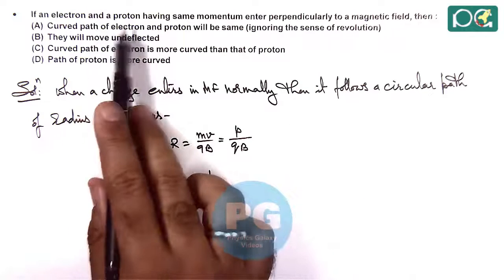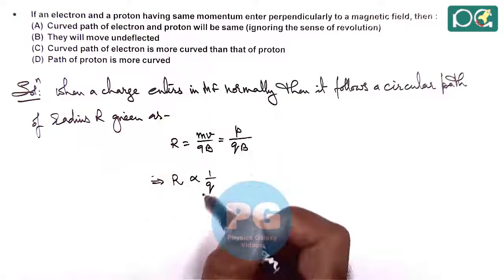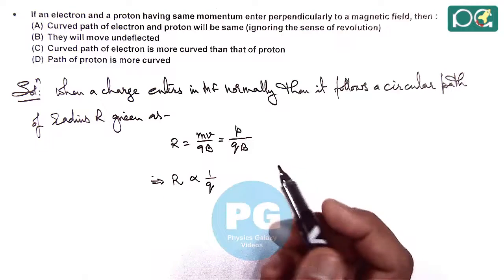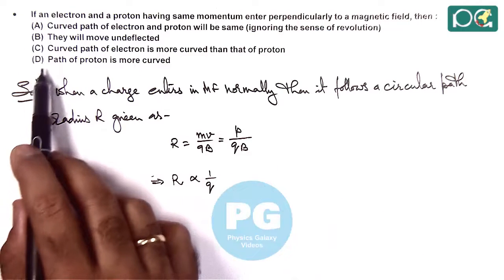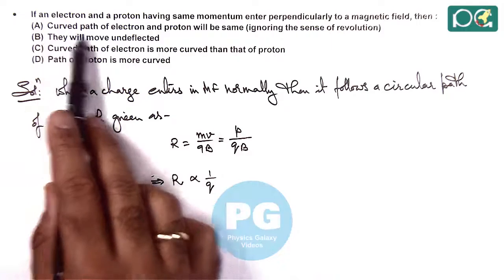So as an electron and a proton are having the same charge magnitude, then in that case we can say the radius of circle will also be same. So we talk about the four options: option A says curved path of electron and proton will be same, that means the radius is same.